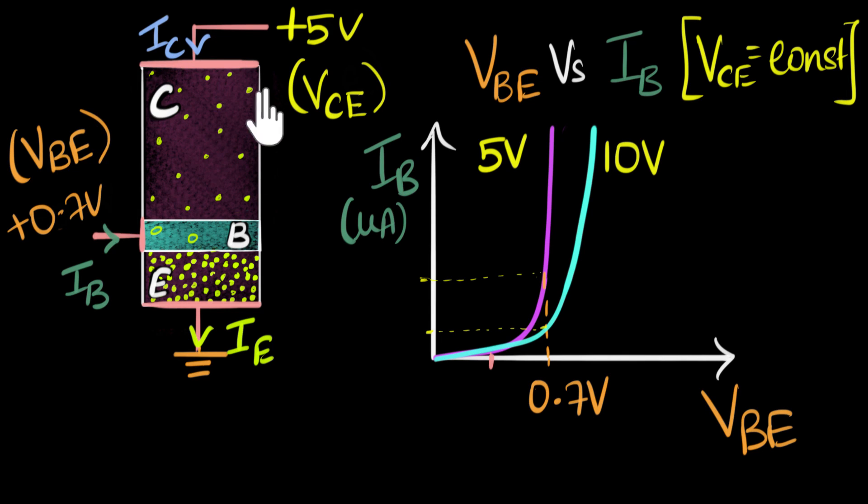So if you want your transistor to work as an amplifier, make sure that your base emitter voltage is at least around 0.7 volt, because once you hit 0.7 volt, then the current will be considerably high and the amplification will work.